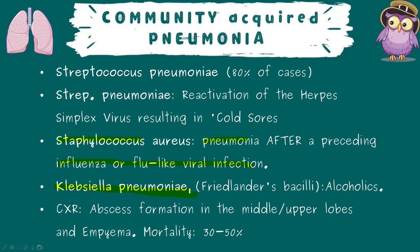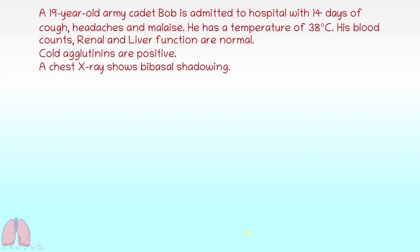Klebsiella — the Friedlander's bacilli — is our alcoholic bacteria. It commonly features in MCQs about aspiration pneumonia or greenish sputum production in an alcoholic patient. Chest X-ray features abscesses and empyema, likely in the upper part of the middle lobe or the lower part of the upper lobes — the dependent zones in recumbent positions. Treat with cephalosporins like cefuroxime and aminoglycosides like amikacin or tobramycin. Mortality is high.